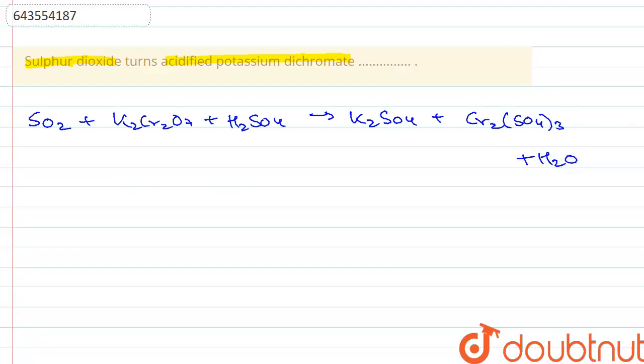So that is the reaction that takes place. Now potassium dichromate here acts as a strong oxidizing agent.